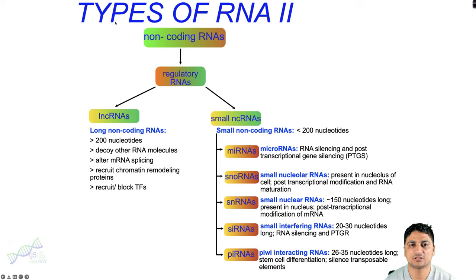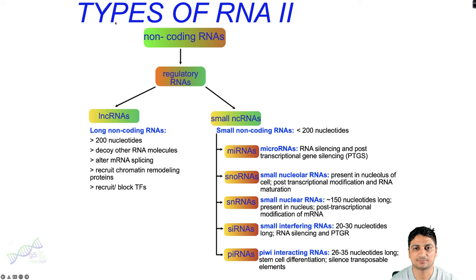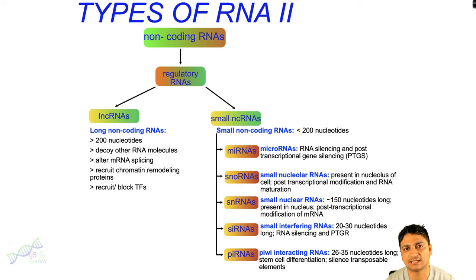In summary, today we talked about the different types of non-coding RNAs, mainly focusing on the regulatory RNAs. If you want to watch the previous video on types of RNA part one, I will put the link in the description. In the next video, we will be talking about RNA silencing, mainly done by miRNAs and siRNAs.